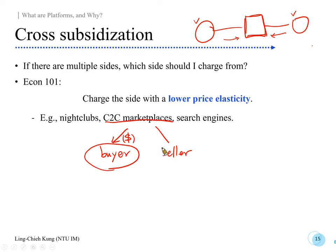A typical online marketplace doesn't charge buyers because they need a large number of buyers registered on their site in order to earn money from sellers. They use that large group of buyers as bargaining power with sellers, saying: 'I have so many buyers — if you want to list a product on our site, pay a listing fee, and do revenue sharing for each dollar you earn.'